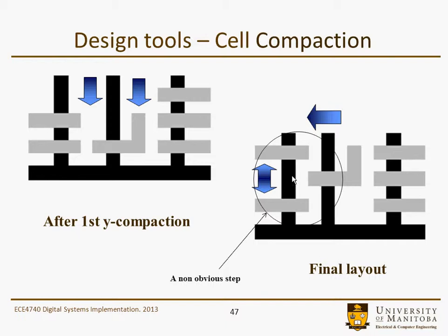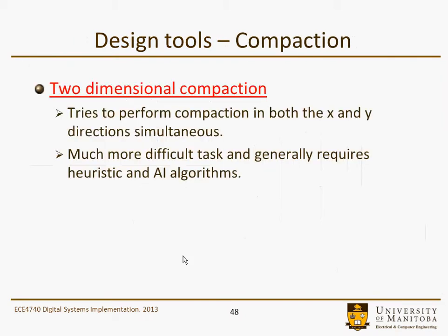A more optimal final layout might jog the design a little and squish it tighter — not obvious from one-dimensional compaction. More sophisticated algorithms such as simulated annealing allow you to relax constraints, move geometry, and potentially gain area. It's a non-obvious step that typically uses heuristics within the algorithms.